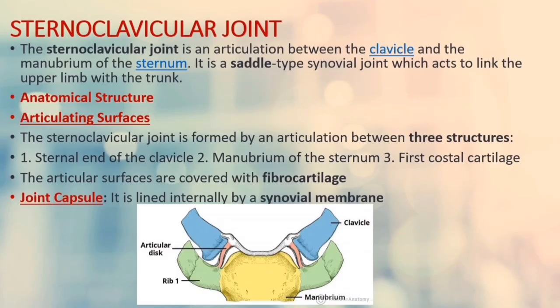The sternoclavicular joint is an articulation between the clavicle and the manubrium of the sternum. It is a saddle-type synovial joint which acts to link the upper limb with the trunk. The sternoclavicular joint is formed by an articulation between three structures: the sternal end of the clavicle, the manubrium of the sternum, and the first costal cartilage. The articular surfaces are covered with fibrocartilage, as opposed to hyaline cartilage present in most synovial joints. The joint is separated into two compartments by a fibrocartilaginous articular disc.